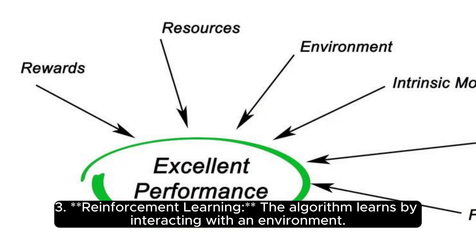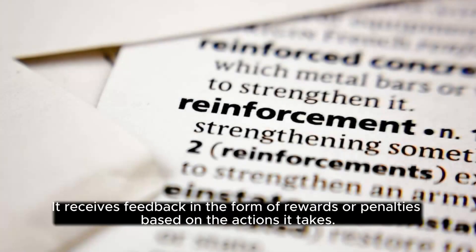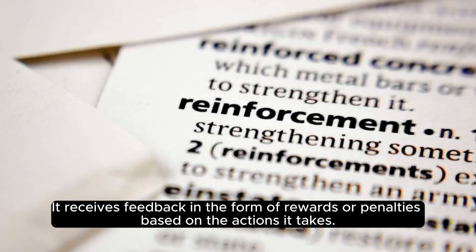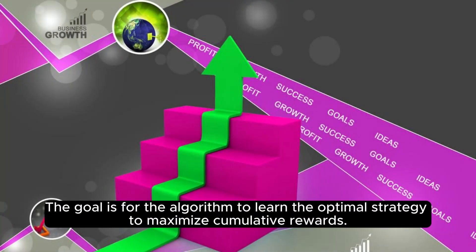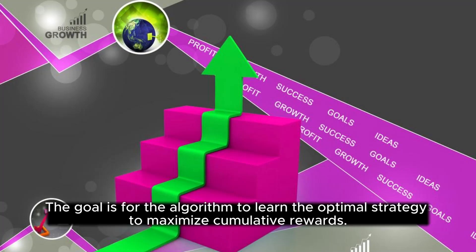Reinforcement learning: the algorithm learns by interacting with an environment. It receives feedback in the form of rewards or penalties based on the actions it takes. The goal is for the algorithm to learn the optimal strategy to maximize cumulative rewards.